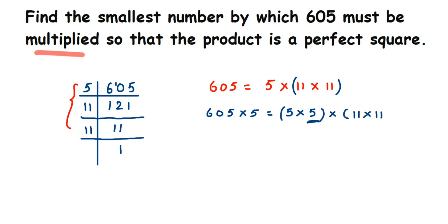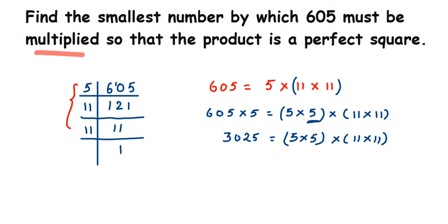So 605 multiplied by 5 equals 3025, and 3025 is a perfect square. We can verify: 3025 = 5 × 5 × 11 × 11. Therefore, the smallest number to be multiplied is 5.